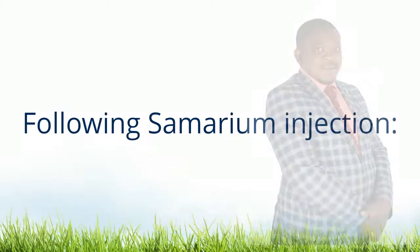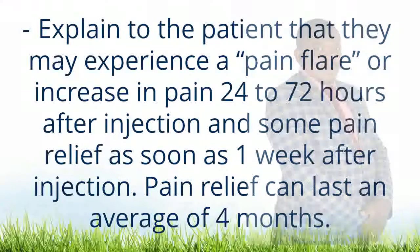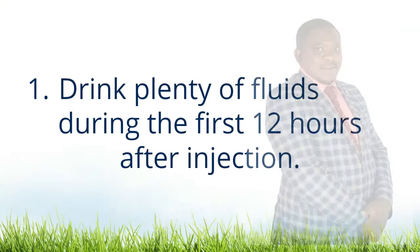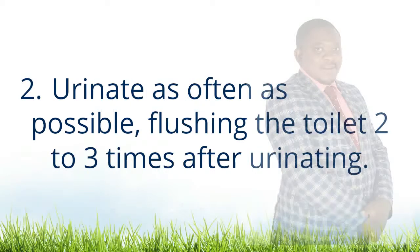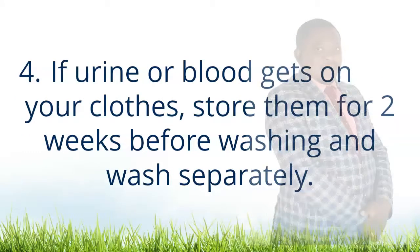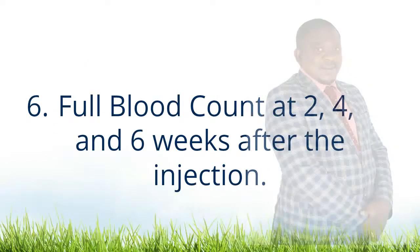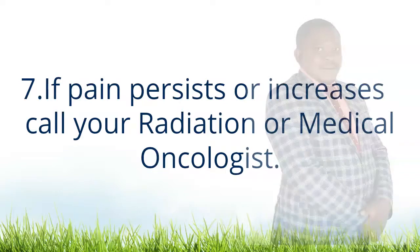Patient and family instructions following samarium injection. Explain to the patient that they may experience a pain flare or increase in pain 24 to 72 hours after injection and some pain relief as soon as 1 week after injection. Pain relief can last an average of 4 months. 1. Drink plenty of fluids during the first 12 hours after injection. 2. Urinate as often as possible, flushing the toilet 2 to 3 times after urinating. 3. Do not have sexual contact with your partner for 12 hours after injection. 4. If urine or blood gets on your clothes, store them for 2 weeks before washing and wash separately. 5. For about 8 weeks after the injection, tell any healthcare professional that you had a samarium injection. 6. Full blood count at 2, 4 and 6 weeks after the injection. 7. If pain persists or increases, call your radiation or medical oncologist.